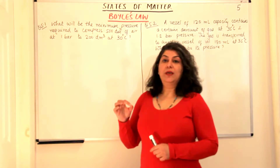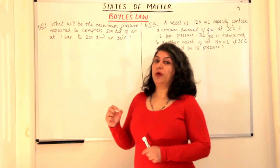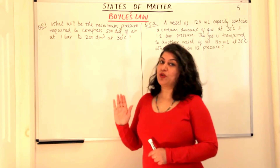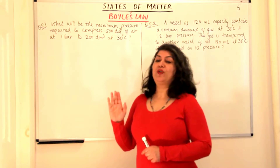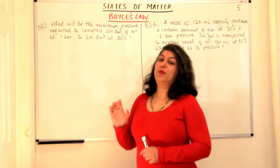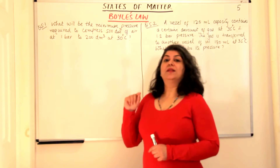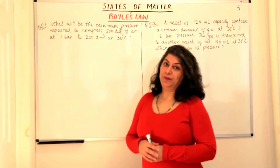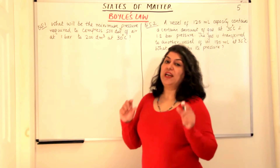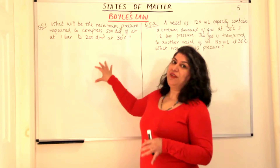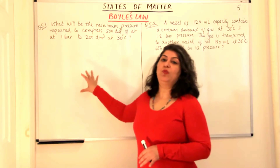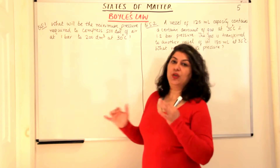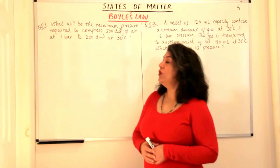As you know, in the previous video I told you about Boyle's law: when the number of moles of a gas is kept constant, or for a fixed number of moles of a gas, when the temperature is constant, the pressure is inversely proportional to the volume. Therefore the relationship we use in this law is P1 V1 = P2 V2. Using that relation we are going to solve a few numericals.